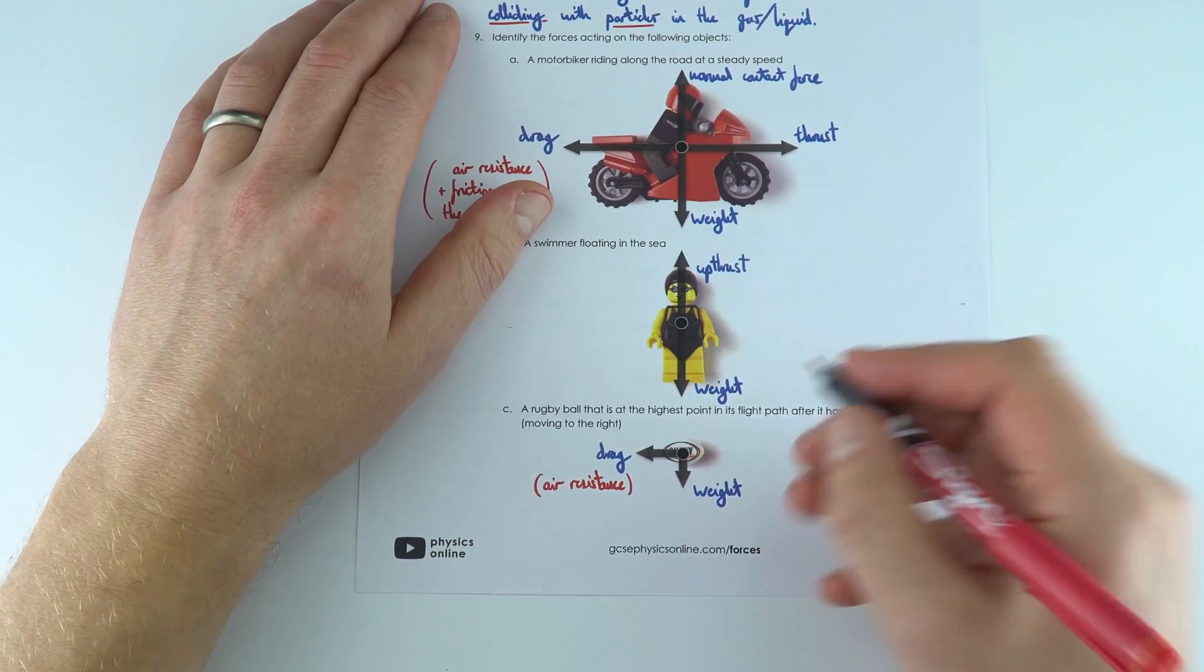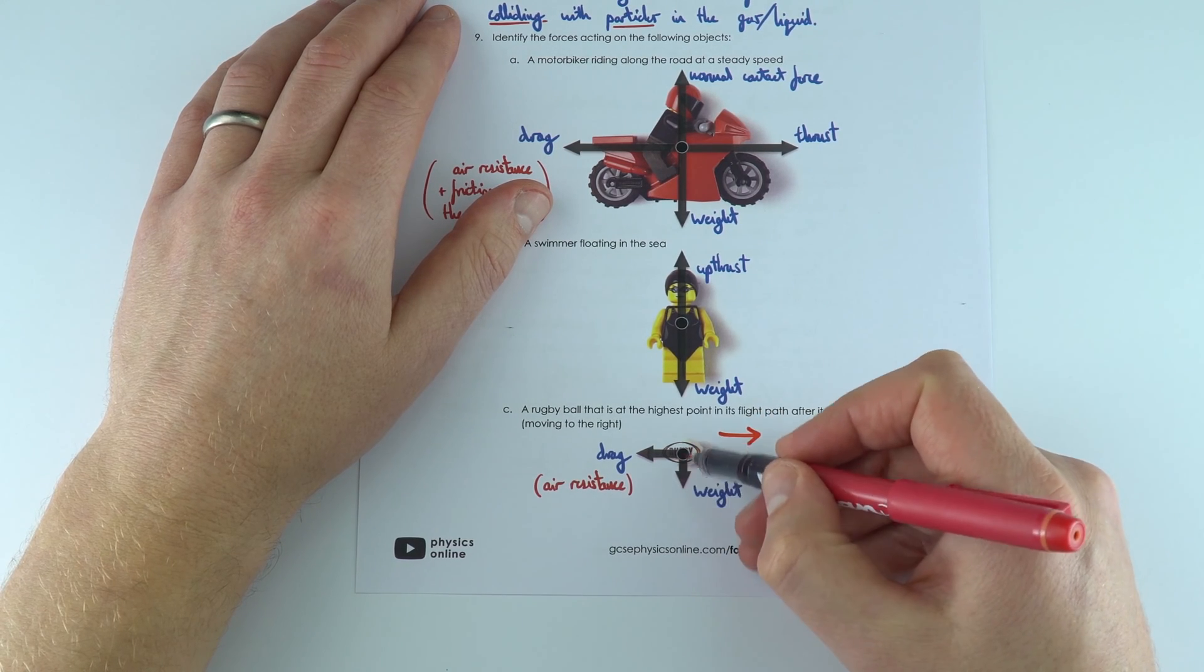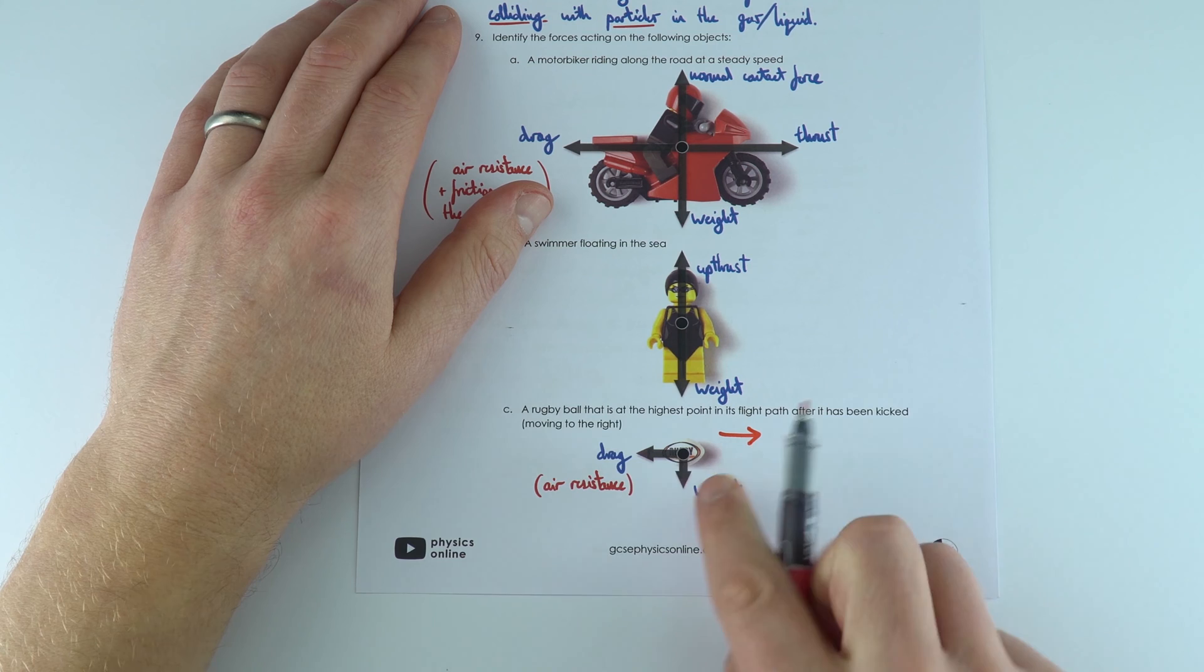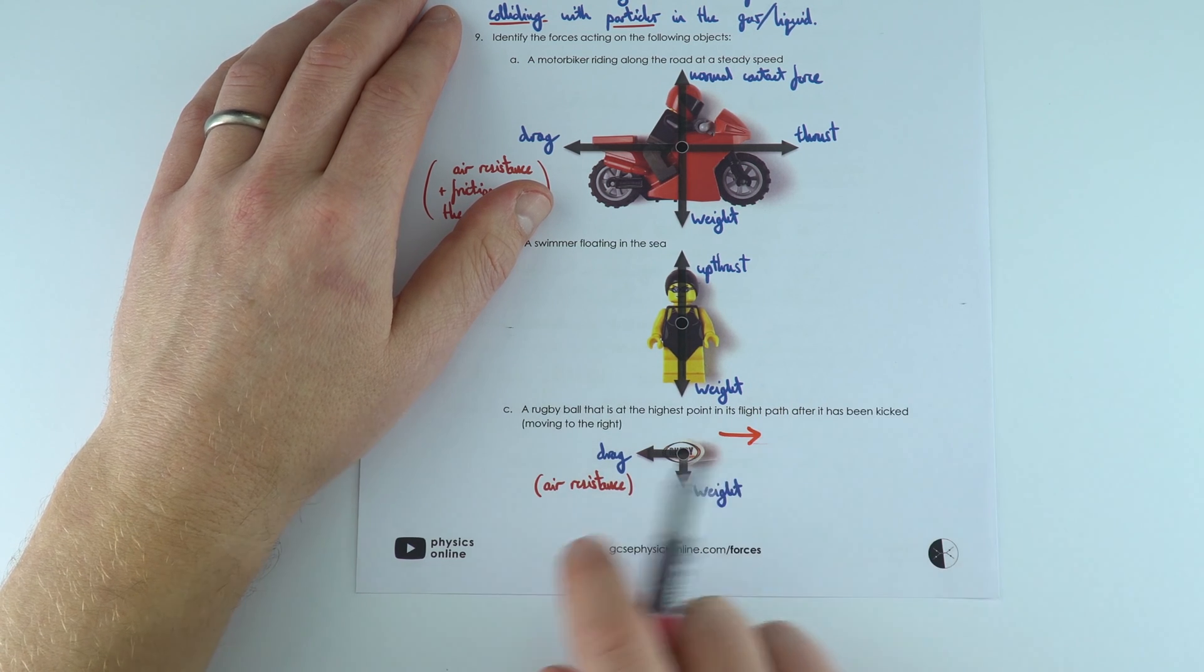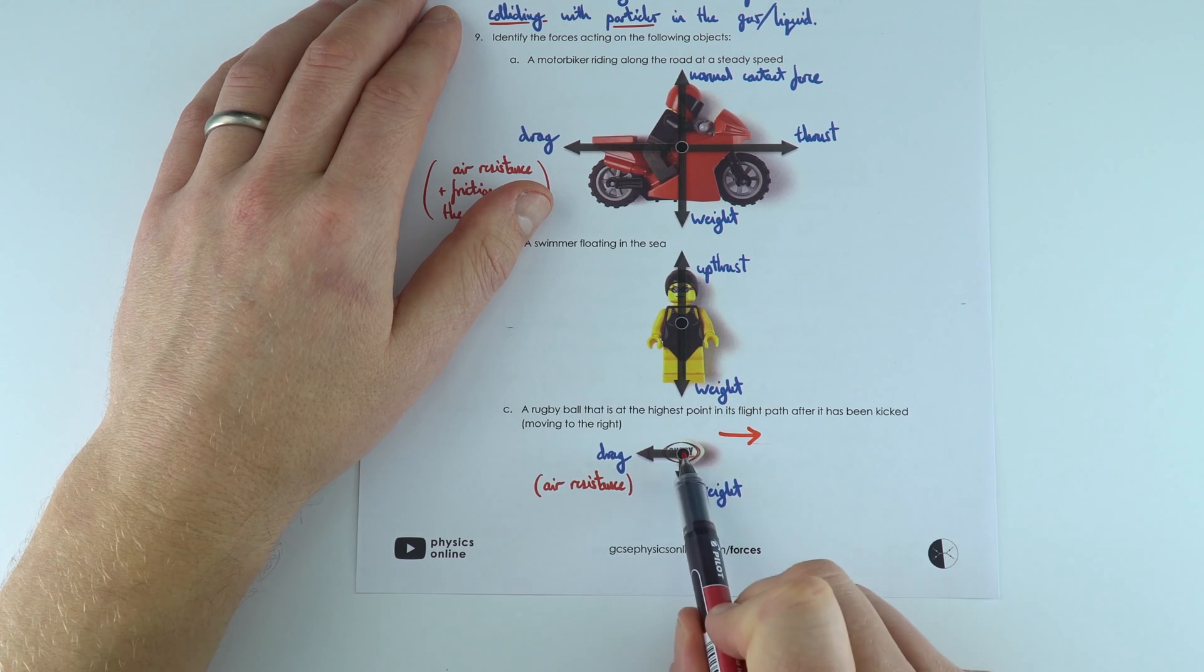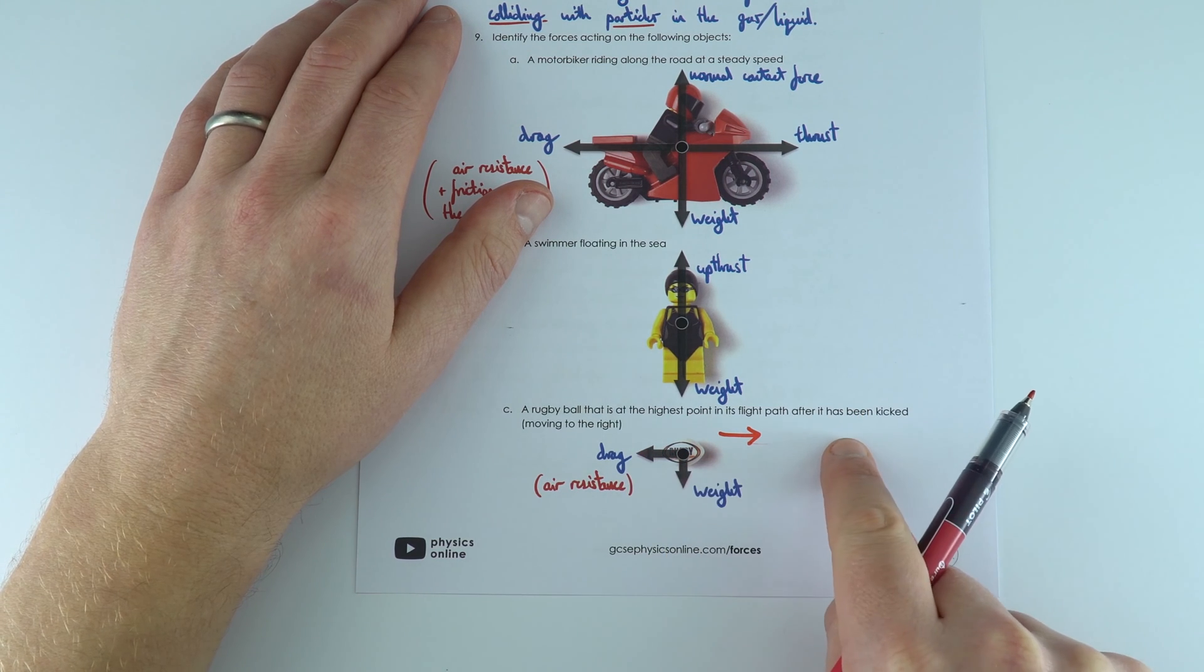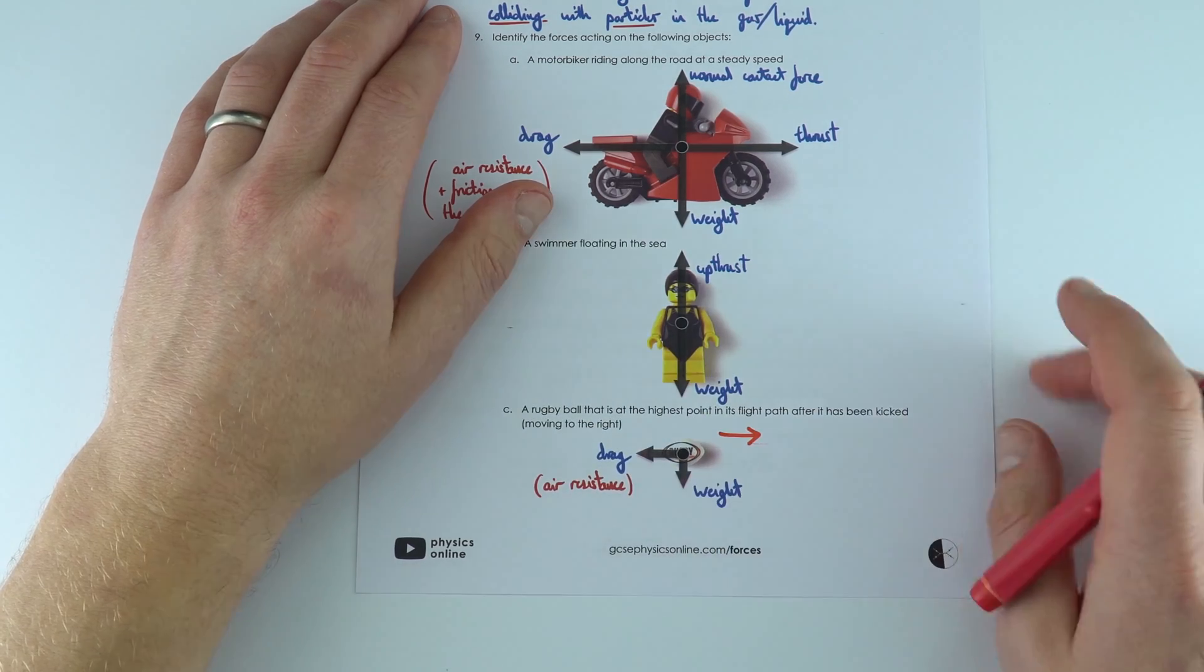Finally, if you've got a rugby ball moving to the right, there's still a weight force acting down, but the drag force is in the opposite direction to its motion. The air resistance opposes the motion of the ball. You've got the weight acting down, the drag force acting back, and there's no force pushing it forward once it's been kicked. Once it's in the air, these are the only two forces acting on it.